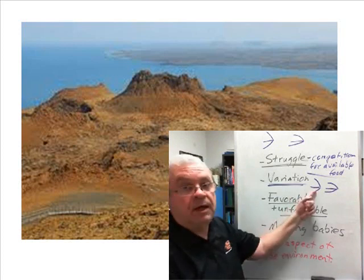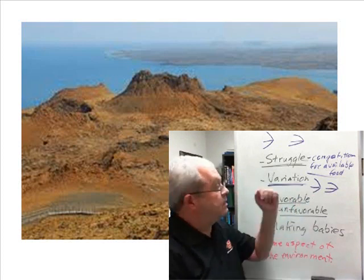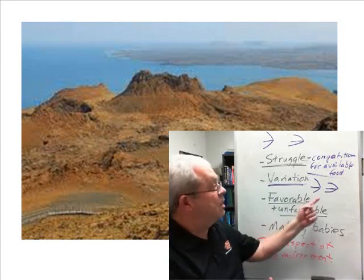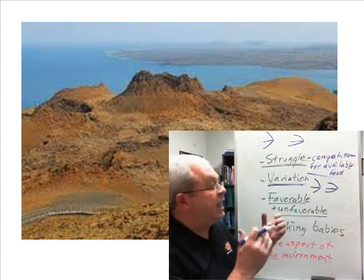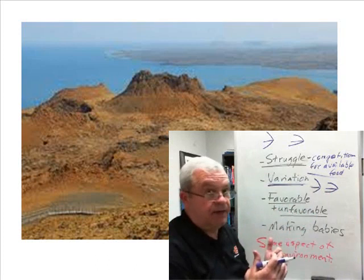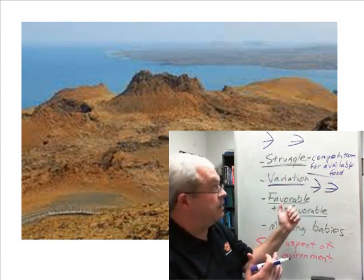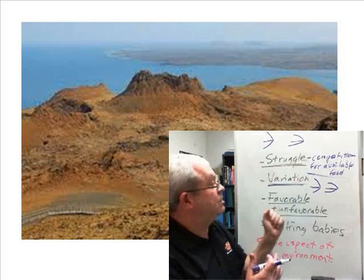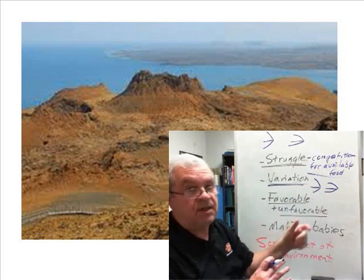The stouter beak — you're able to crack those nuts and seeds open and gobble up the contents quicker, while the ones with slender beaks are struggling a little harder to get them open and get left out. They get out-competed in the competition for available food, out-competed in the struggle for existence. The stouter beaks get full tummies; the slender beaks don't.